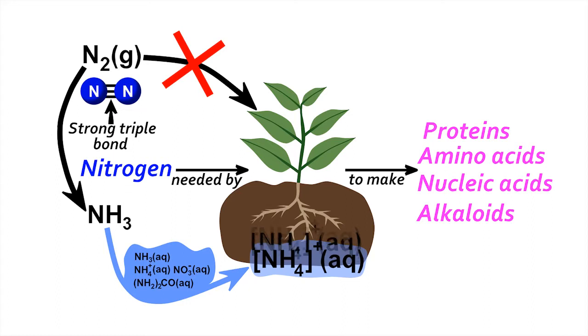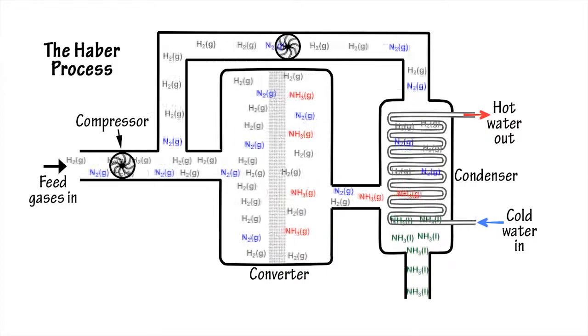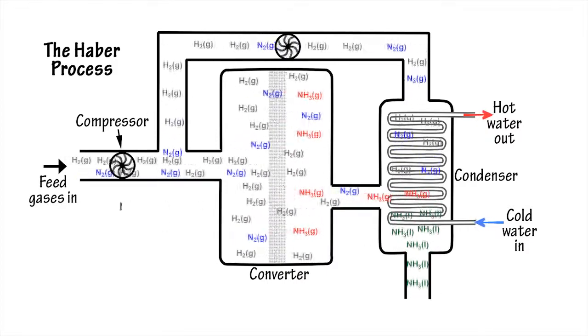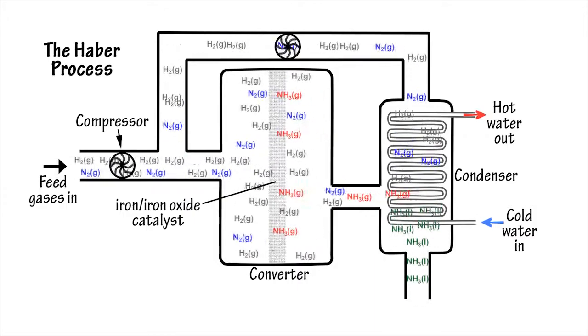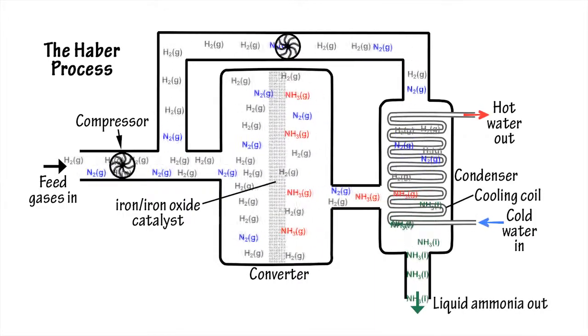The task of the industrial chemist, then, is to find the best method for converting atmospheric nitrogen into ammonia. This is done via the Haber process, in which a pressurized mixture of the gases hydrogen and nitrogen is heated and passed over an iron catalyst, reacting to form ammonia, which is then cooled to form liquid ammonia.